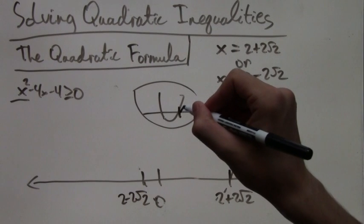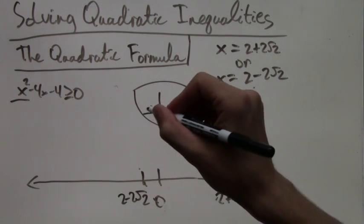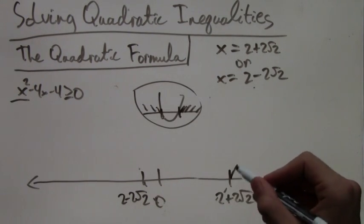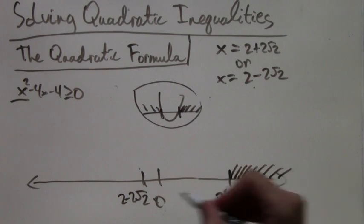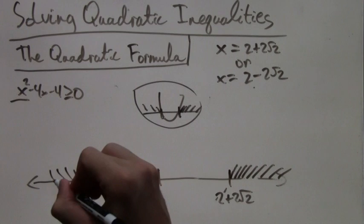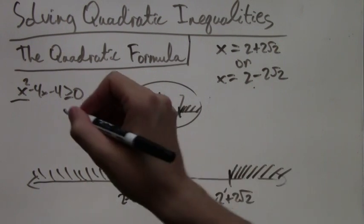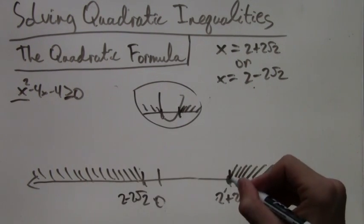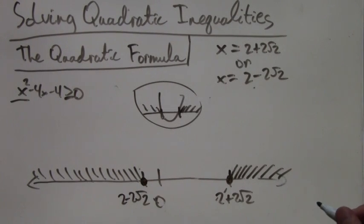So we know it opens up, and that means it's greater than 0 on the outside of the roots. So on the number line, I'm highlighting the portion outside of the roots. And since we want greater than or equal to 0, we include these two roots.